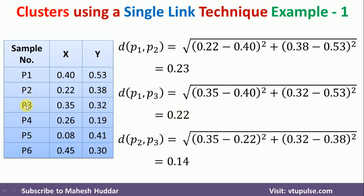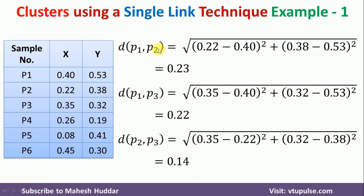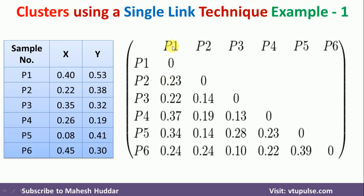The distance between P2 and P3 is the square root of (0.35 minus 0.22) squared plus (0.32 minus 0.38) squared, which gives 0.14. I have shown how to calculate the distance between two points with three examples; the remaining distances you can calculate by yourself. Once done, you form the complete distance matrix, where P1-P2 is 0.23, P1-P3 is 0.22, and P2-P3 is 0.14.